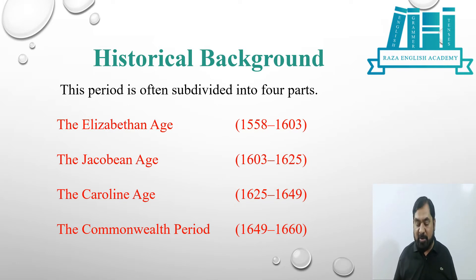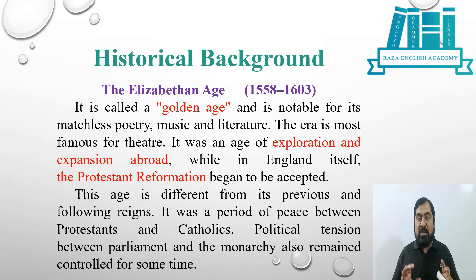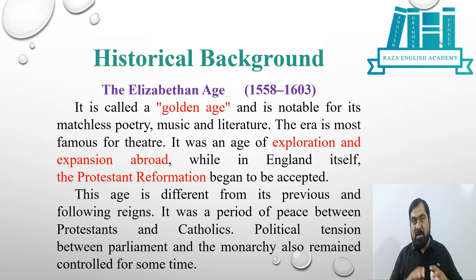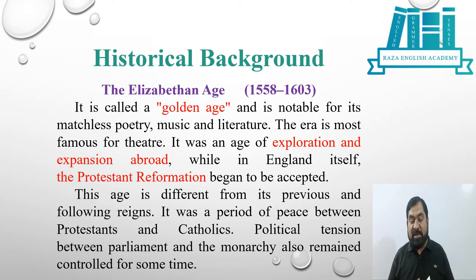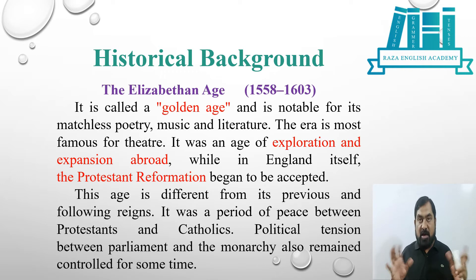Moving on to the historical background of the Elizabethan Age, which started in 1558 and continued till 1603 — it is called the golden age and is notable for its matchless poetry, music and literature. The era is most famous for theater. It was an age of exploration and expansion abroad. The English came to prominence during this period, while in England itself the Protestant Reformation began to be accepted. This age was a period of peace between Protestants and Catholics, and political tension between parliament and the monarchy also remained controlled.